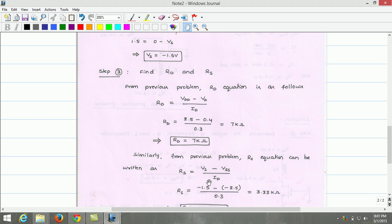Substituting Vs, VSS and Id, the value of Rs is found to be 3.33kΩ.